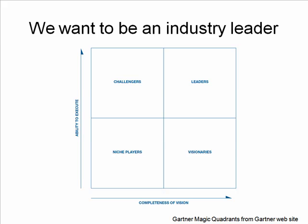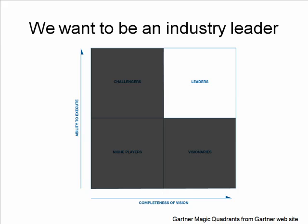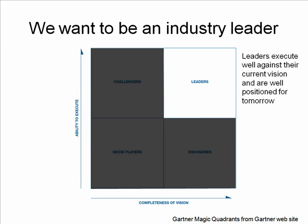We want to be an industry leader. When we look at Gartner's Magic Quadrants there are four quadrants here, but what we want to do is be in that leadership quadrant. Here's how Gartner defines a leader: 'Leaders execute well against the vision and are positioned for the future.' So we want to be in that upper right-hand quadrant. What I've done here is shade out the quadrants I don't want you to focus on, so I'm emphasizing by shading out the diagram underneath. I haven't wiped it out - I've simply shaded it so you don't focus on those other areas. You focus on the area you can still see clearly, and then build on explaining that particular area.